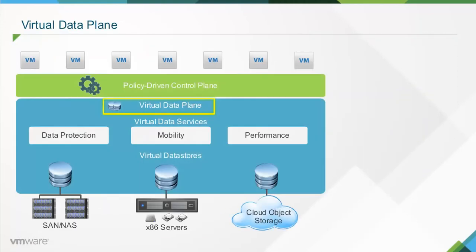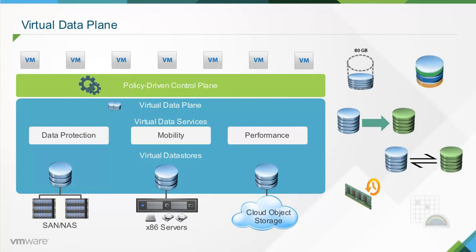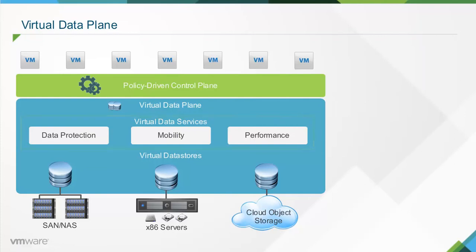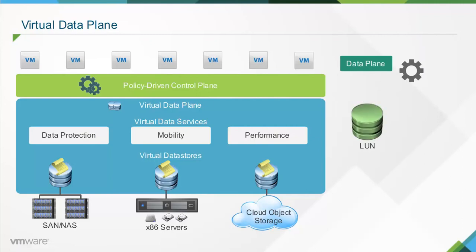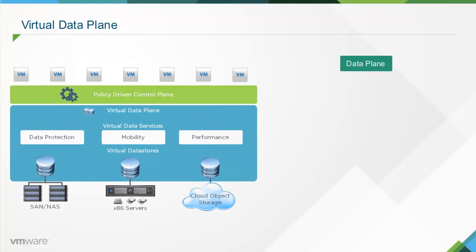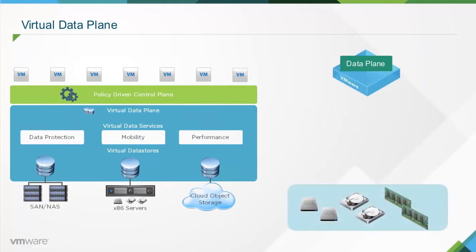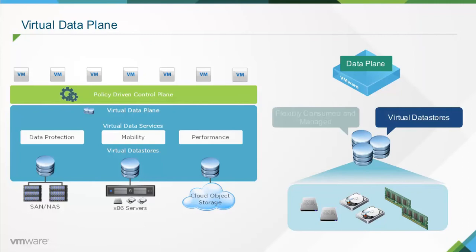The virtual data plane stores data and applies data services such as compression, replication, caching, snapshots, de-duplication, and availability. While data services are provided by a physical array or implemented in software, the virtual data plane abstracts the services and presents them to the policy-driven control plane for consumption, and also applies the resultant policy to objects in the virtual data store. In today's model, the data plane operates on rigid infrastructure-centric constructs such as LUNs or storage volumes. In the VMware SDS model, the data plane is virtualized by abstracting physical hardware resources and aggregating them into logical pools of capacity known as virtual data stores, which can be flexibly consumed and managed.